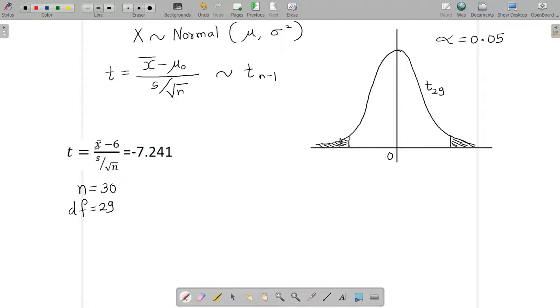This being a symmetric curve, I can say that this is alpha by 2 and this is alpha by 2. So the area under the curve may be 0.025, and this also will be 0.025. First of all, we need to find these two values.